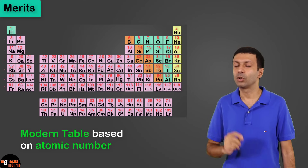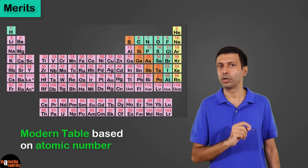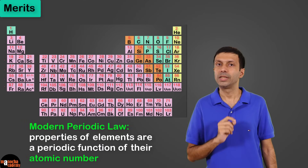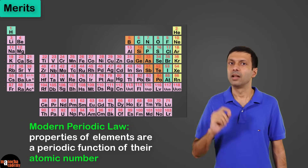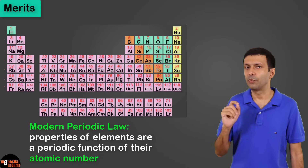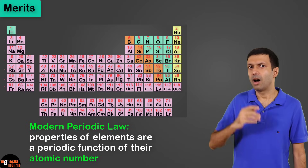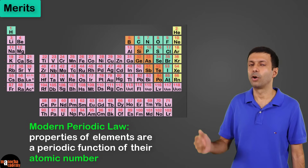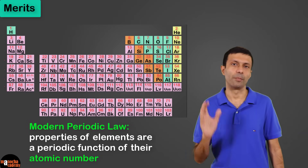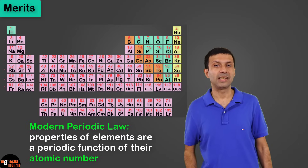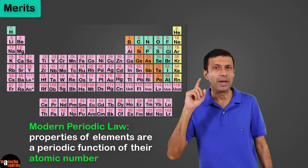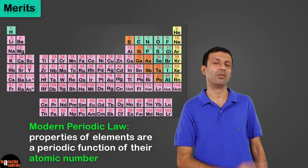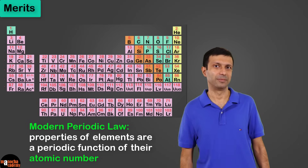It's based on the modern periodic law, which states that the properties of elements are a periodic function of their atomic number. So let's take a look at how the anomalies of Mendeleev's table were corrected.